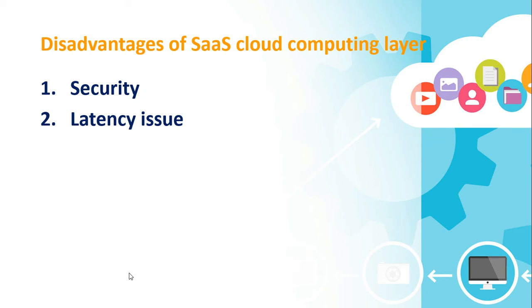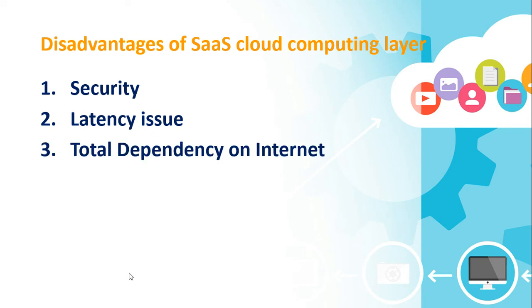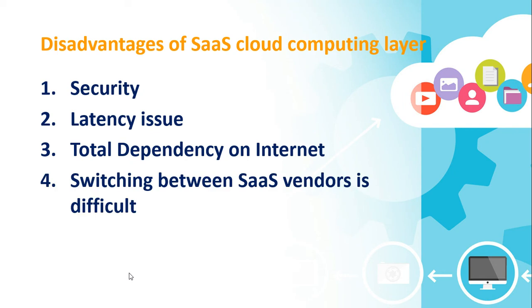Third, total dependency on the internet. Without an internet connection, we are not able to use the applications. And fourth, switching between SaaS vendors is difficult. Switching SaaS vendors involves the difficult and slow task of transferring very large data files over the internet, so it is better to stick with your ideal SaaS provider to avoid complexity or difficulties in transferring your files.